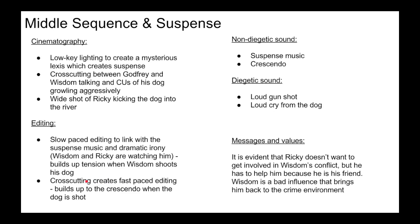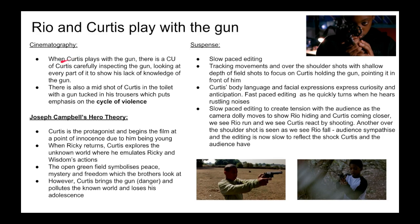There is cross-cutting which creates fast-paced editing, building up to a crescendo when the dog is shot. Some messages and values: it is evident that Ricky doesn't want to get involved in Wisdom's conflict, complaining 'I thought you were just gonna scare him.' Wisdom is a bad influence that brings Ricky back into the crime environment. When Rio and Curtis play with the gun, there is a close-up of Curtis carefully inspecting every part of it, showing his lack of knowledge and curiosity. There is also a mid-shot of Curtis in the toilet with a gun tucked in his trousers, which puts emphasis on the cycle of violence — learning behaviour from what he sees on TV, what he learns from his brother, and previously from playing violent video games.